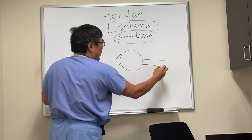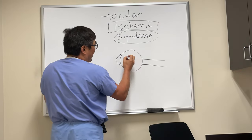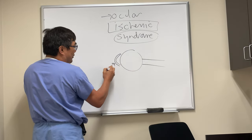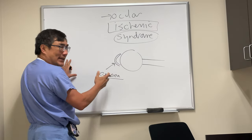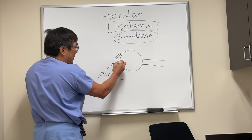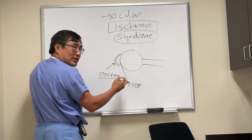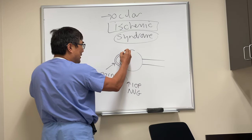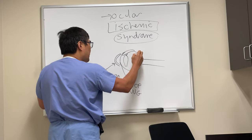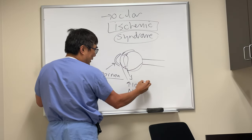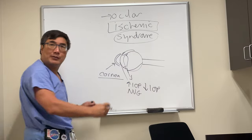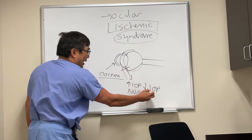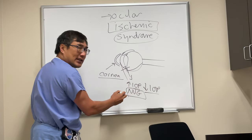The ischemia can manifest in the front, middle, and back of the eye. In the front of the eye, the cornea might get edematous. You might get increased intraocular pressure — that's glaucoma, usually neovascular glaucoma. But ironically, if the ciliary body is affected, you might get low intraocular pressure because you have ischemia to the aqueous humor production site. So it might be high or low, but usually it's high neovascular glaucoma.